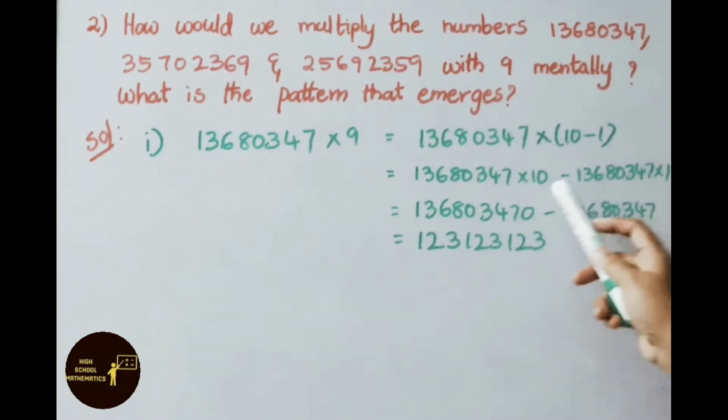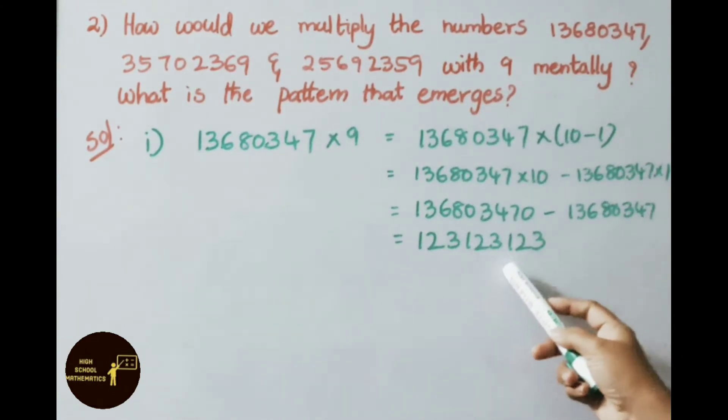So when we multiply with 10, we get this answer. When we multiply with 1, we get the same number. When we subtract these two, we get the answer 12 crore 31 lakh 23123. Similarly, the next two numbers also we shall multiply with 9.